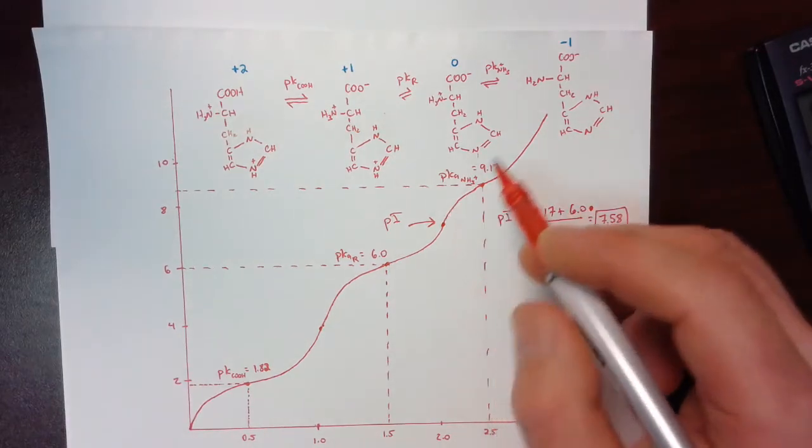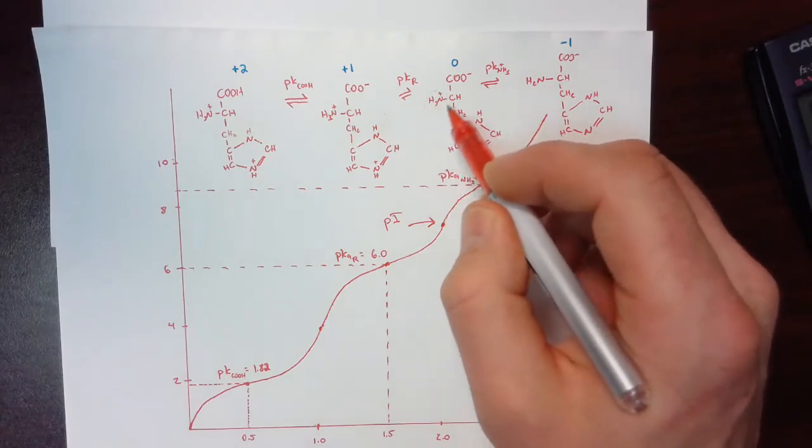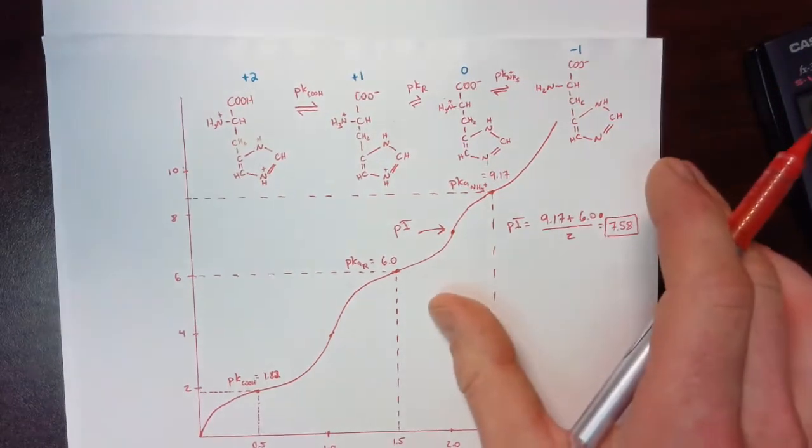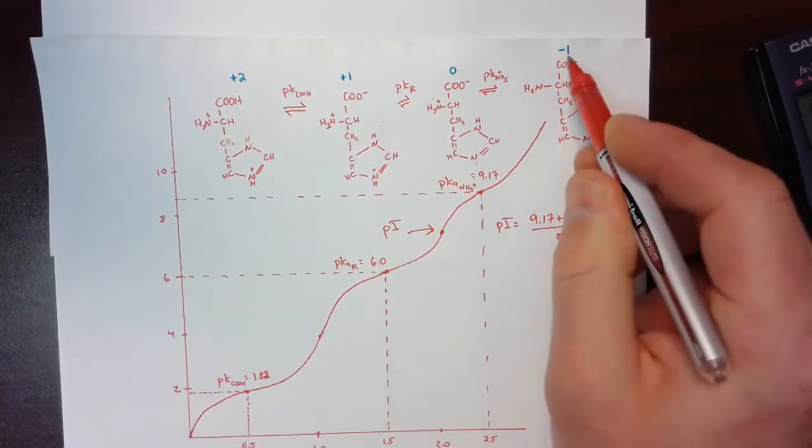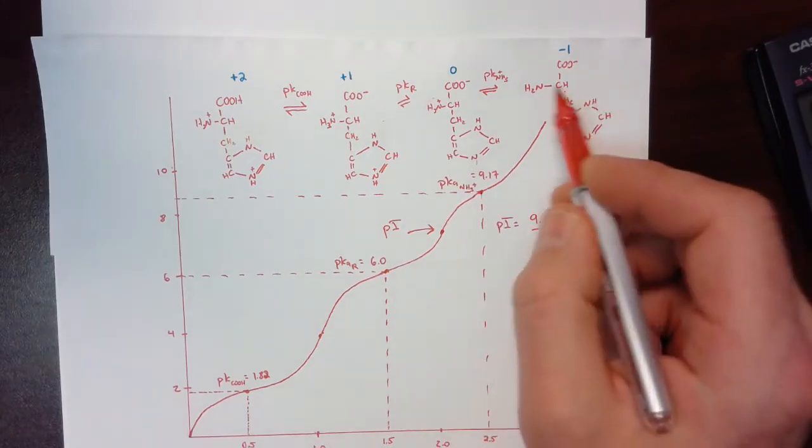Okay, continuing to add base, the proton that will come off next will be from this amine group on the backbone. So more and more of the amino acid will take on this form, where the charge is negative one, all the way up until we get to the pKa.